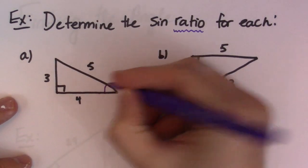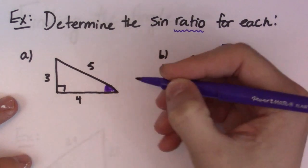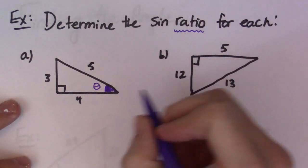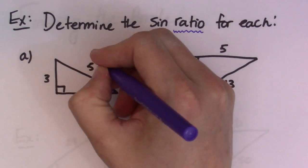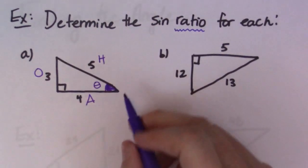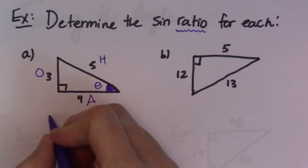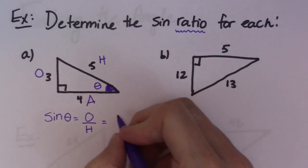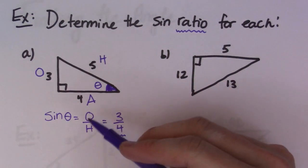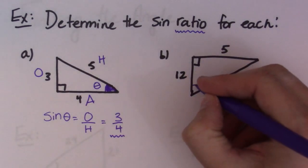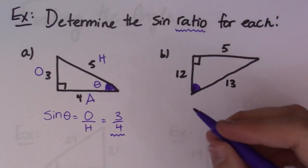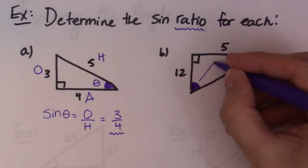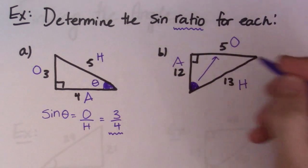This example says determine the sine ratio for each. Any time you're asked for a ratio, all you're doing is writing the fraction of the opposing sides. Let's go from this angle right here — that's our reference angle, I'll call it theta. We label the hypotenuse up here, the opposite side over here, and the adjacent side down here. So sine theta equals O over H, which in this case is 3 over 4. That is the sine ratio. Just be careful about what angle you're going from, because the hypotenuse never changes, but the adjacent and opposite sides will, depending on what angle we're going from.